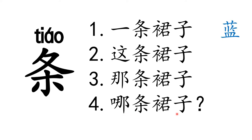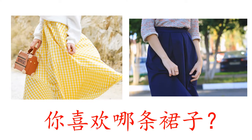To put in colors: 一条蓝色的裙子 means 'a blue skirt'. 这条红色的裙子 means 'this red skirt'. 那条黄色的裙子 means 'that yellow skirt'. 你喜欢哪条裙子 means 'which skirt do you like?'